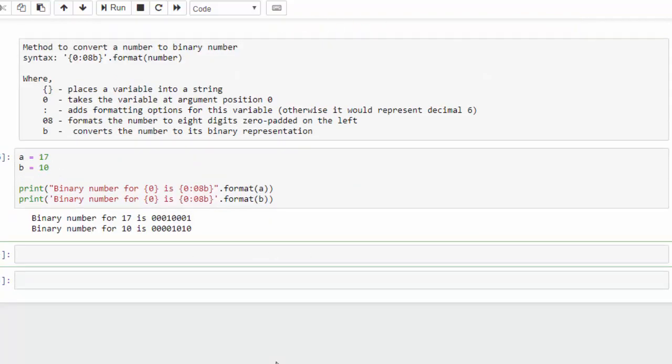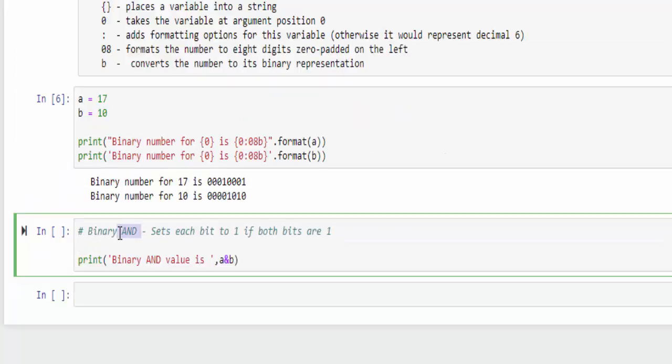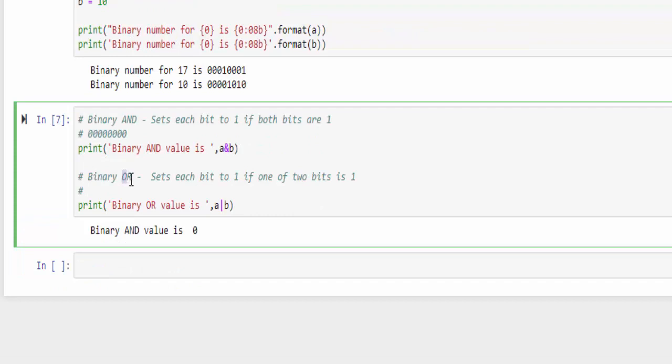Now we will see each example. The first one is binary AND, and we are doing the bitwise comparison between 17 and 10. Bitwise binary AND: you will get 1 if both are 1, if not it is 0. Totally we will have 8 zeros because there is no 1 1 comparison, so the output will be 0. The next one is binary OR. This will set the bit to 1 if any one of the 2 bits is 1. In this condition, comparison between 1 and 0 is 1, then 1 0 1 1. We will run and see.